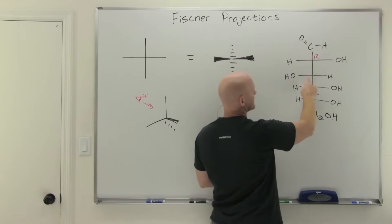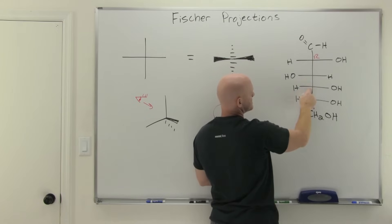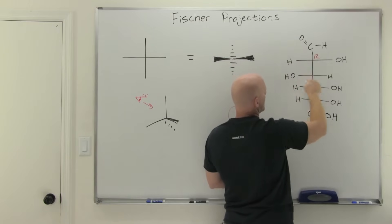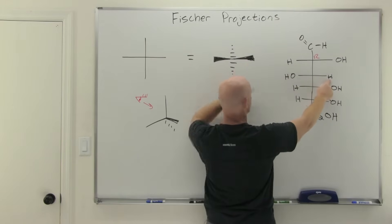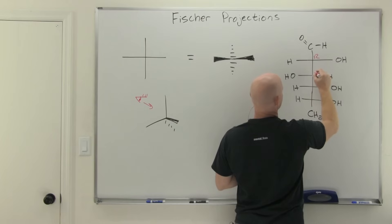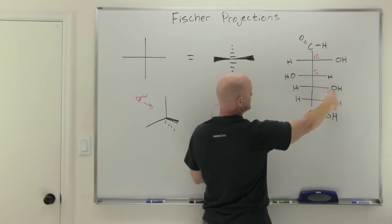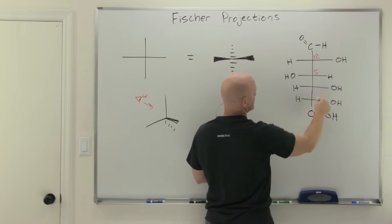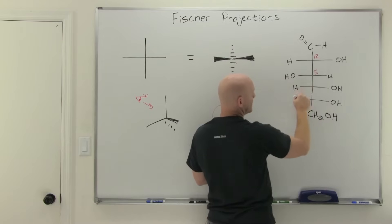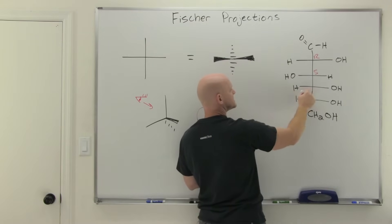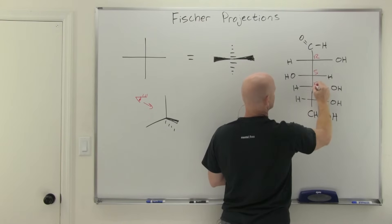For the next chiral center, oxygen is number one, the carbon above is number two, and the next carbon is number three. Going around looks like a right-handed turn, which would be R, but again the number four priority group is a wedge on the horizontal, so it's actually S. For the third chiral center, the same priority assignment gives a left-handed turn, and again the number four priority is on the horizontal as a wedge, so instead of S it's R.